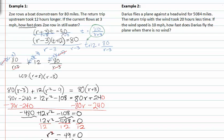In the second problem, Darius flies a plane against a headwind for five thousand eighty four miles. The rate has to be against the headwind, and the wind speed is ten miles per hour, so we subtract ten. The time t equals five thousand eighty four miles.